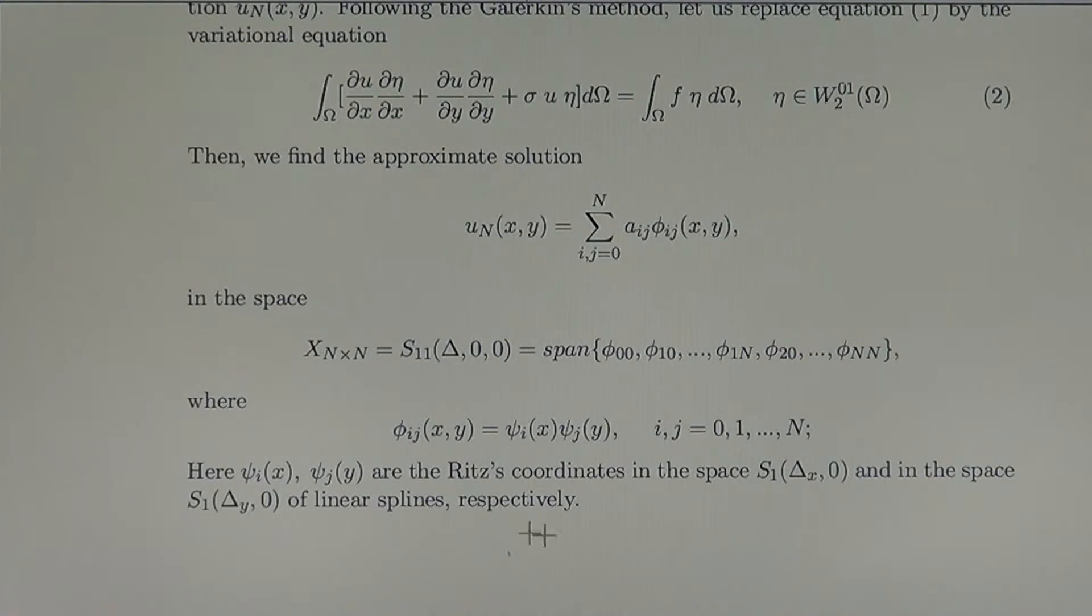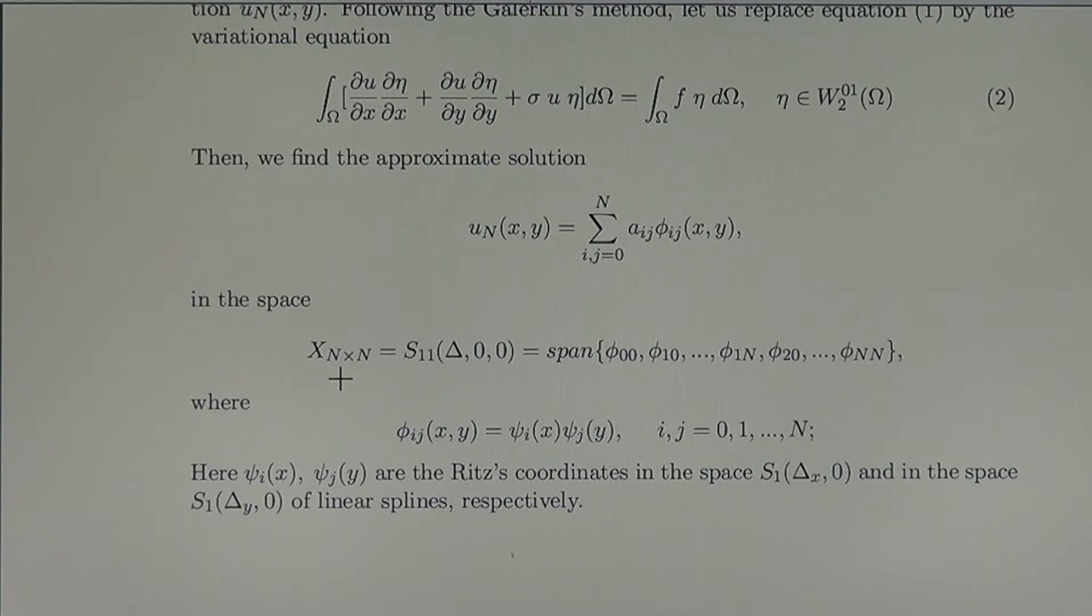So the space in which we determine the approximate solution by Galerkin-Ritz method is the finite dimensional space capital XNN, which is S11 delta 0 0, spanned on the coordinates we have clarified.